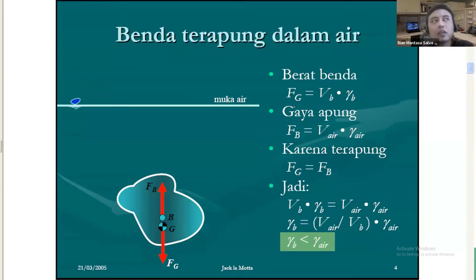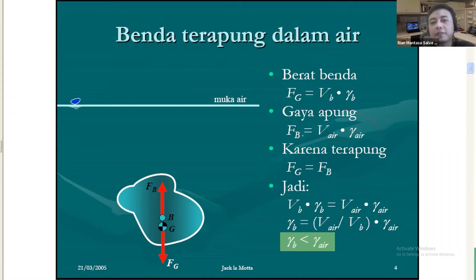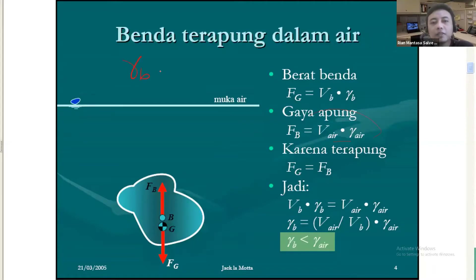Kemudian kalau gaya apung, itu lebih ke gaya yang diberikan oleh airnya. Jadi kita bisa pakai volume air dikalikan berat jenis air. Sehingga kalau kita ingin menyatakan bahwa benda itu terapung, berarti kita perlu memastikan bahwa berat jenis benda itu harus lebih kecil daripada berat jenis air. Itu sebuah benda bisa disebut dengan terapung.